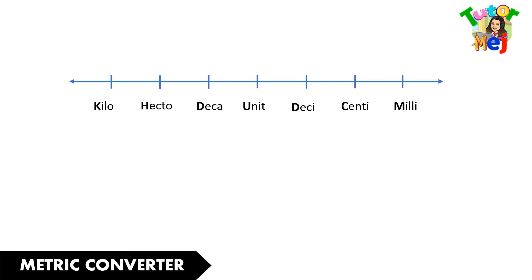If we are about to convert, for example, a unit measure to milli, then we have to follow these steps. First, determine your starting point. Let us put the decimal point there.